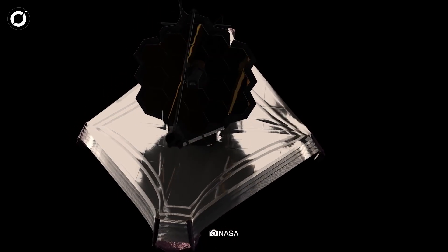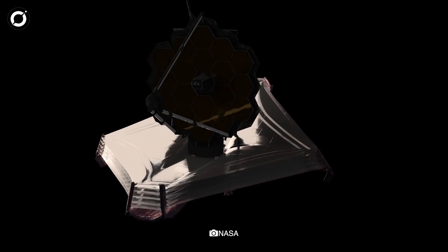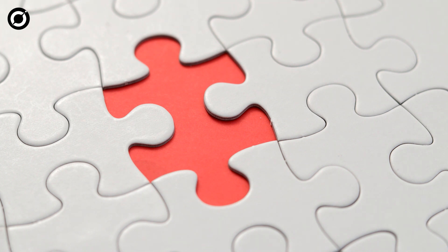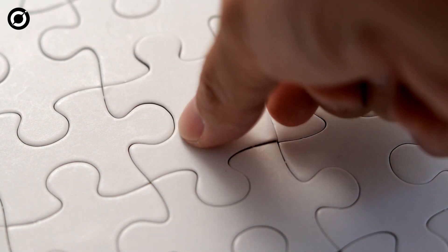If all goes well, then JWST's observations of the Eye of Sauron will provide astronomers with an important missing piece of the jigsaw puzzle of galaxy formations, but what do I know?